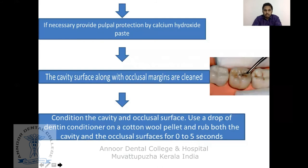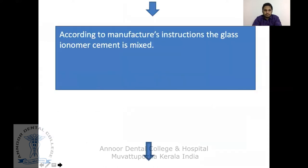If necessary, provide pulp protection using calcium hydroxide paste if the caries is deep. The cavity surface and adjacent margins are then cleaned. Condition the cavity and adjacent surface using a drop of dentin conditioner on a cotton wool pellet, rubbing both the cavity and the surface for about 5 seconds. Then mix the GIC according to the manufacturer's instructions.